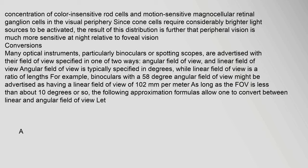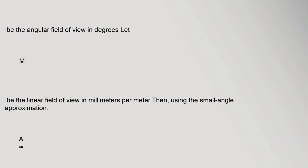Conversions: Many optical instruments, particularly binoculars or spotting scopes, are advertised with their field of view specified in one of two ways: angular field of view and linear field of view. Angular field of view is typically specified in degrees, while linear field of view is a ratio of lengths. For example, binoculars with a 58-degree angular field of view might be advertised as having a linear field of view of 102. Let θ be the angular field of view in degrees, and let m be the linear field of view in millimeters per meter.